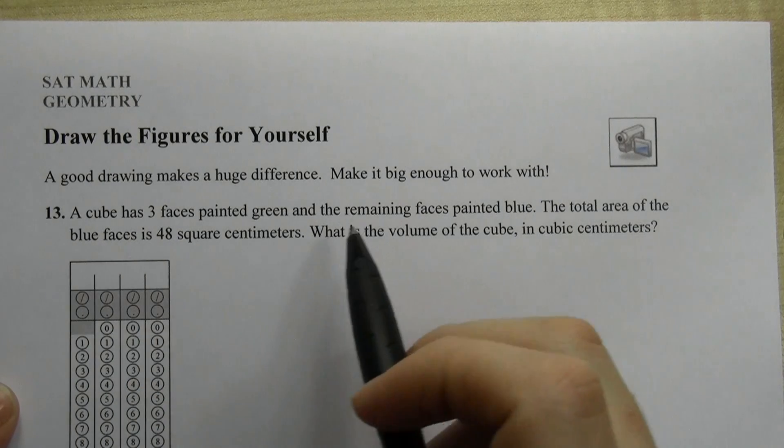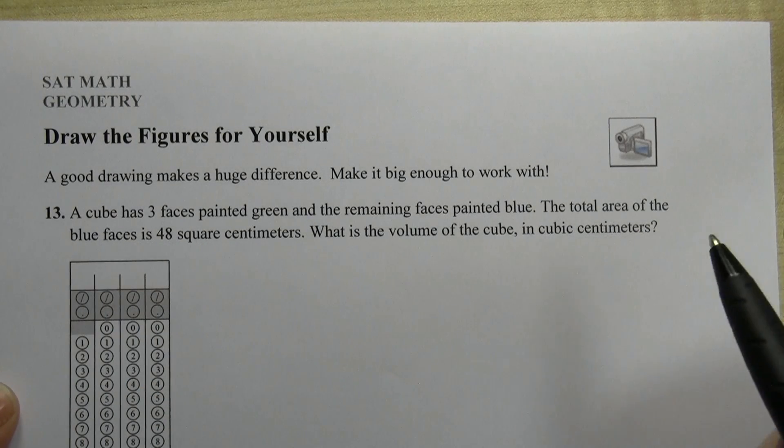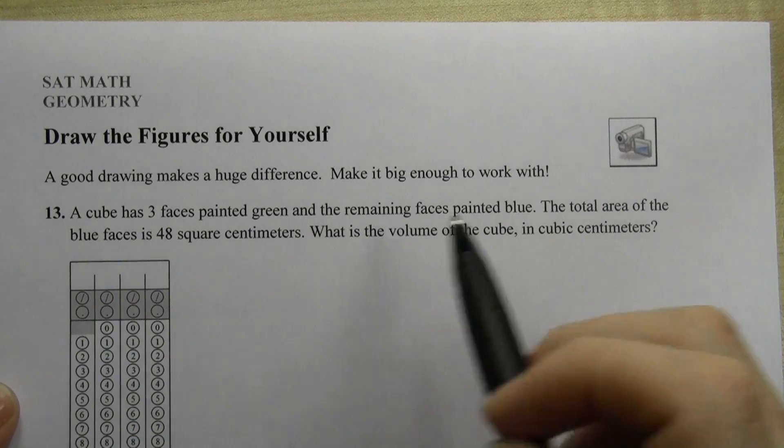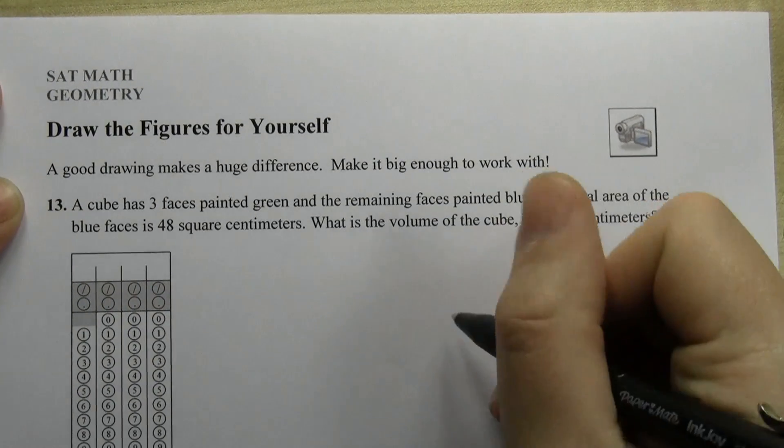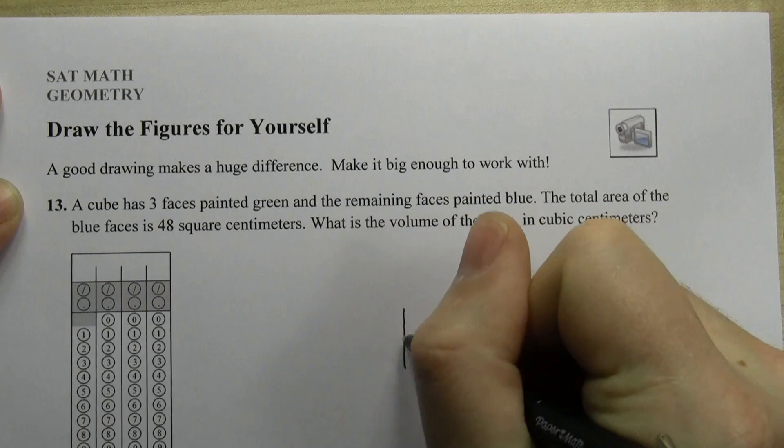Two characteristics of a good drawing are that it's big enough and it's accurate. This case would say a cube has three faces painted green and the remaining faces painted blue. The total area of the blue faces is 48 square centimeters. What is the volume of the cube in cubic centimeters? In this case they describe a cube but they don't actually show it to you. So draw it.